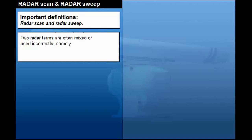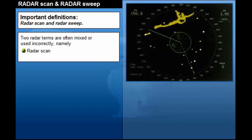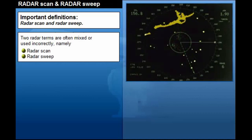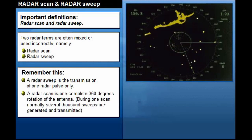Two radar terms are often mixed or used incorrectly. One radar scan is the transmission of one radar pulse only. A radar scan is one complete 360 degrees rotation of the antenna. During one scan, normally several thousand sweeps are generated and transmitted. In modern radar systems, both sweep and scan correlation may be used to filter away unwanted noise.